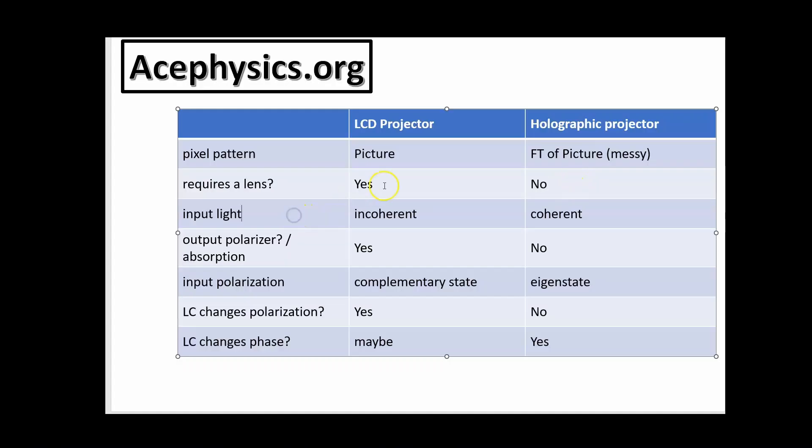The input light for an LCD is incoherent, but the holographic projector requires coherent light, which basically means a laser. The LCD projector uses an output polarizer where light is absorbed. The holographic projector does not use an output polarizer, and there is no absorption. All the light that enters the imaging element is projected.